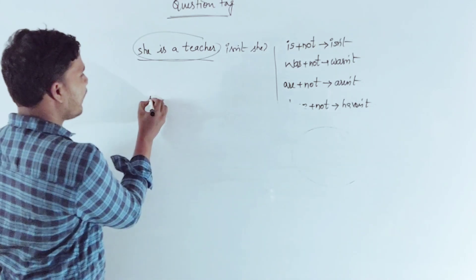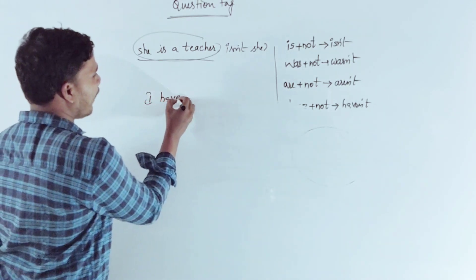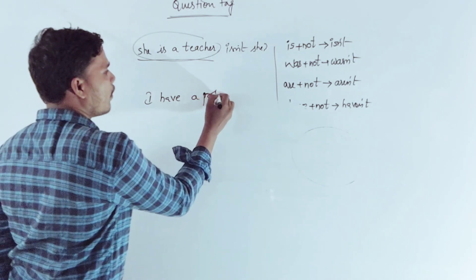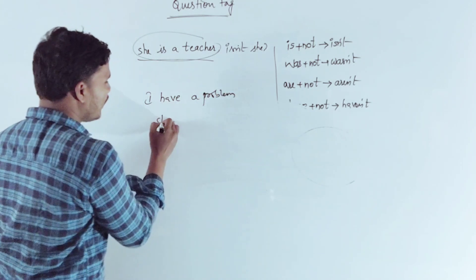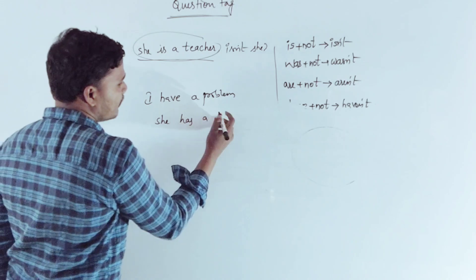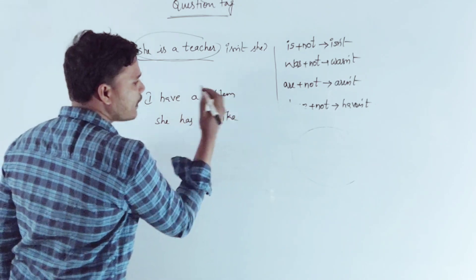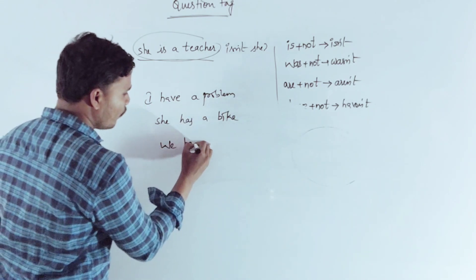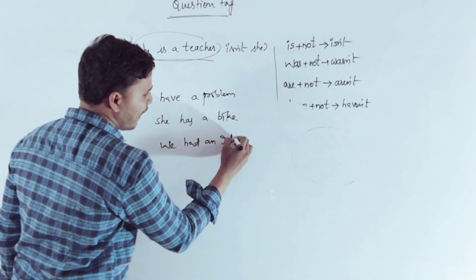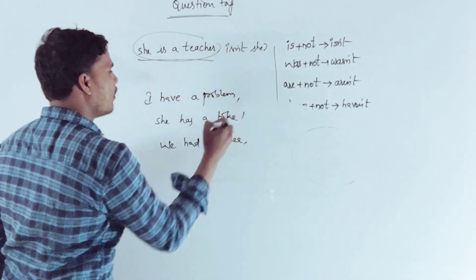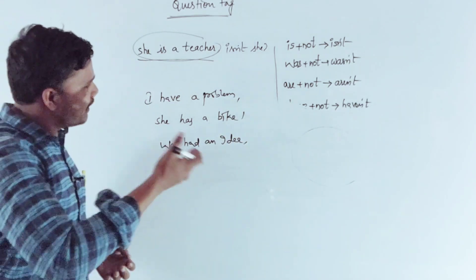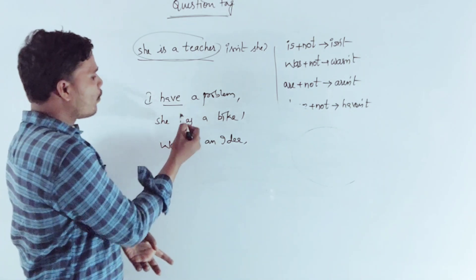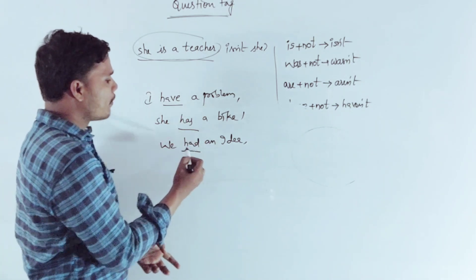'I have a problem.' 'She has a bike.' 'We had an idea.' In these sentences, have, has, and had are acting as the main verbs.